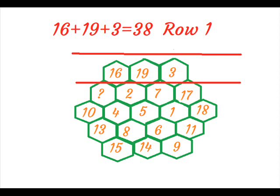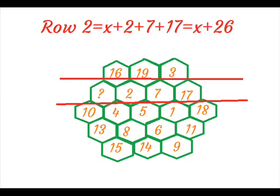On adding row 1, we get 16 plus 19 plus 3 equal to 38. On adding row 2, we get question mark plus 2 plus 7 plus 17 is equal to question mark plus 26.